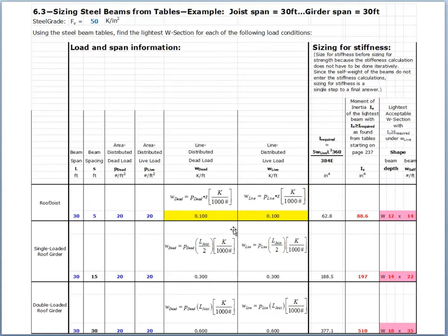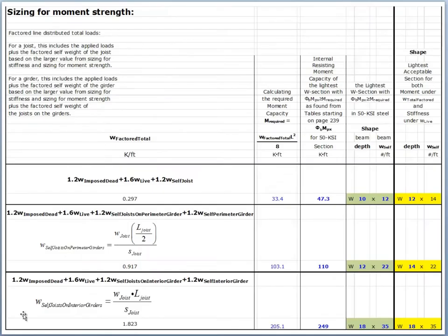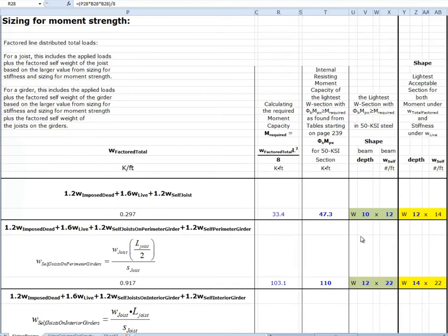In the previous steps we did our load calculations. We did our sizing for stiffness and came up with a W12×14 based on stiffness requirements. Now we're going to go into sizing for moment strength. We have the sizing procedure for joists, single-loaded girders, and double-loaded girders, and we're starting on the roof and working downward toward the floor. We're going to go to our active spreadsheet.